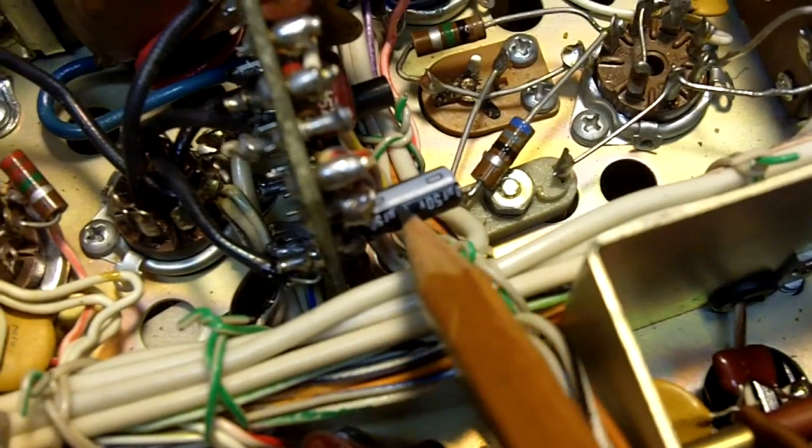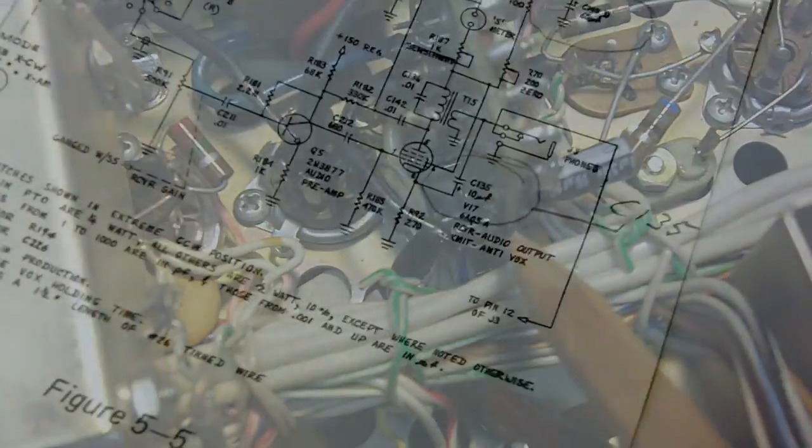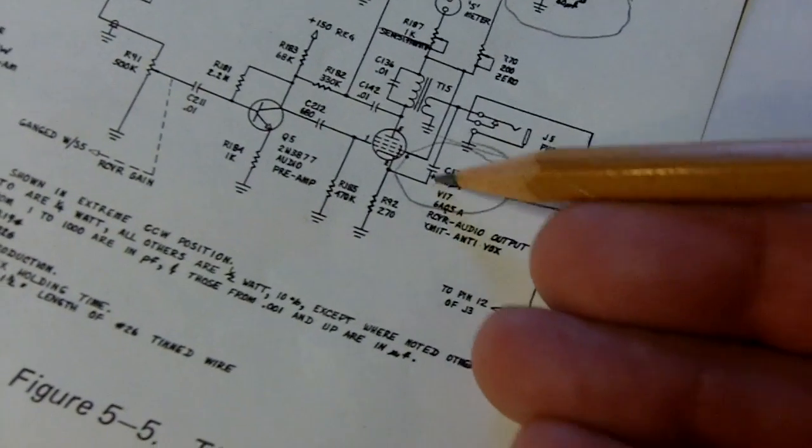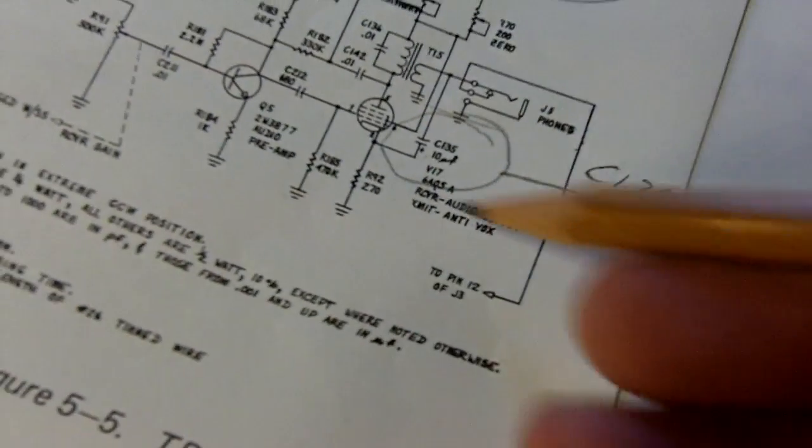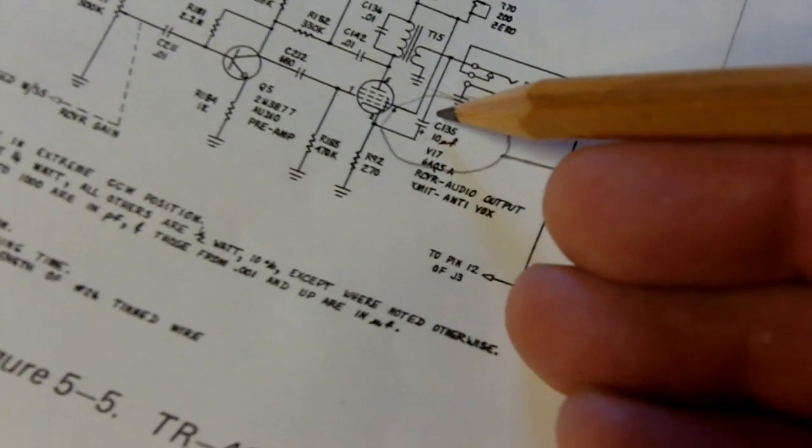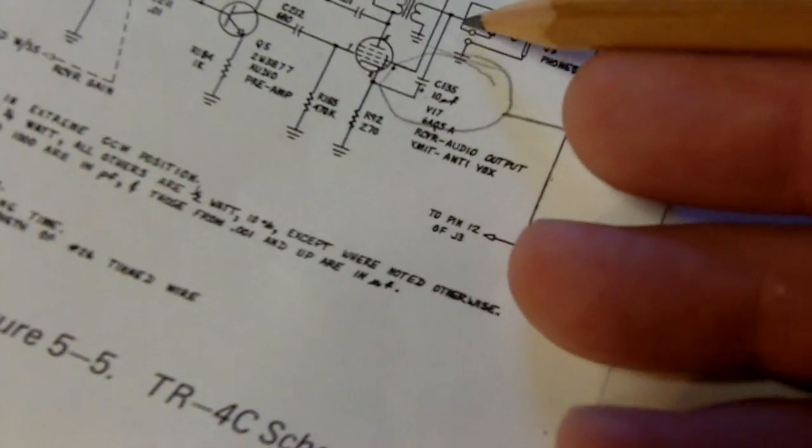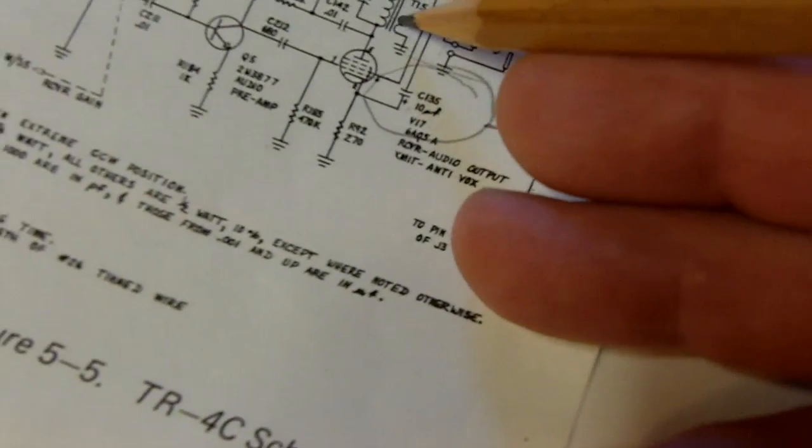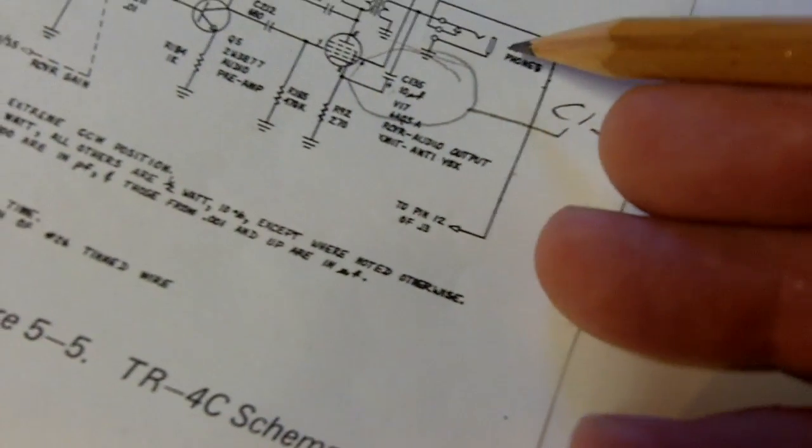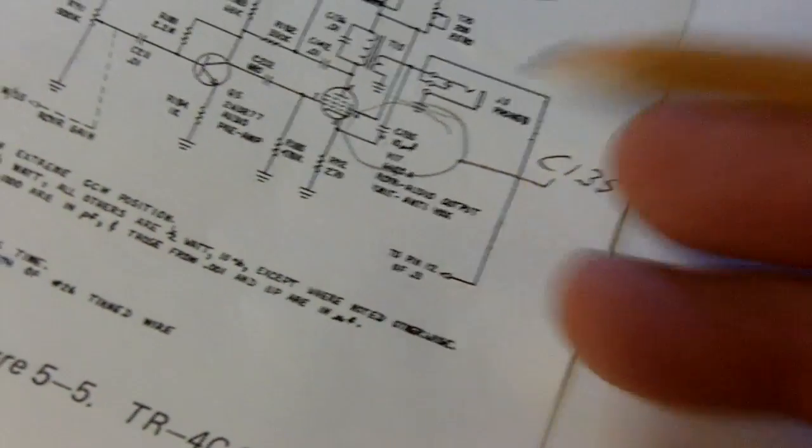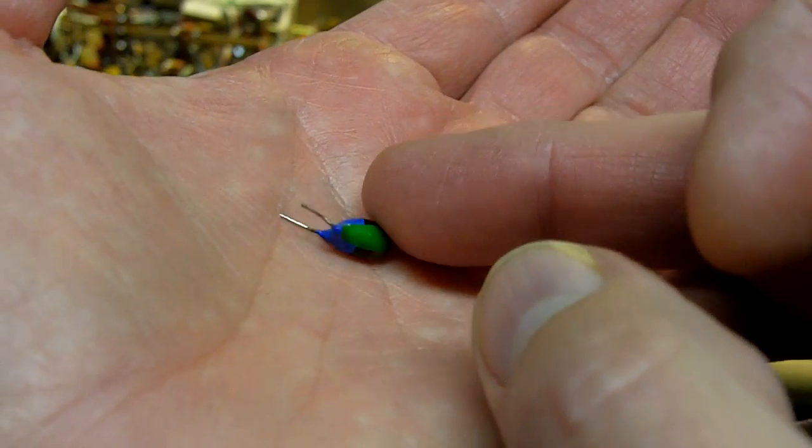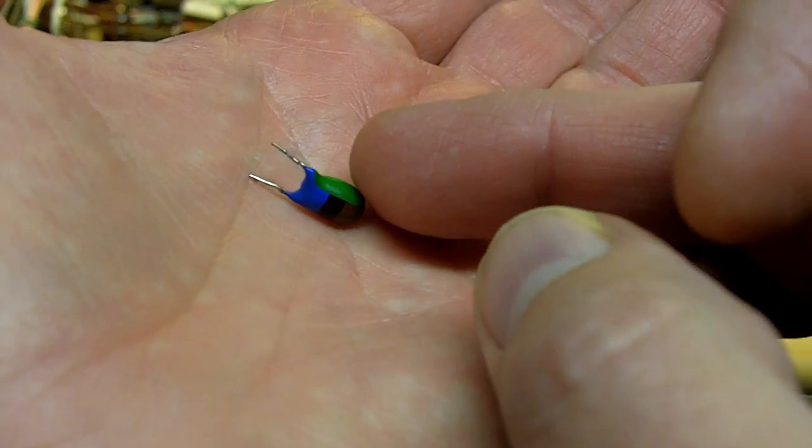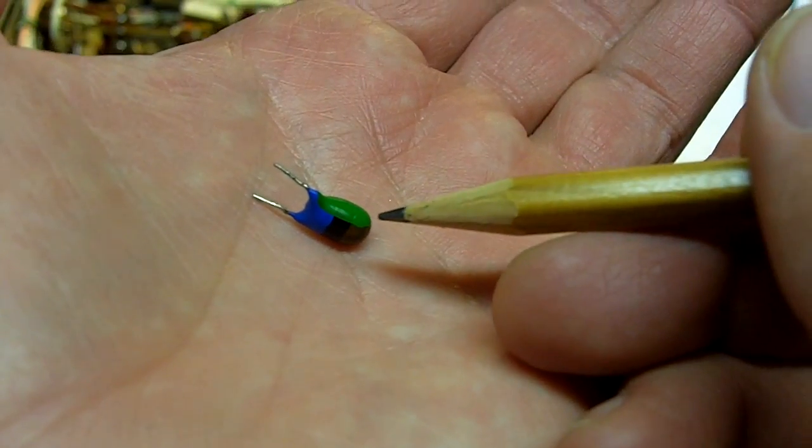And replace that I have the electrolytic in there now. Looking at the schematic again the positive side of that 10 microfarad electrolytic will go to pin two of the audio output tube and the minus side ends up going to the audio transformer and the headphone jack. So this is the capacitor I just replaced, is a tantalum capacitor and they are marked just the opposite.